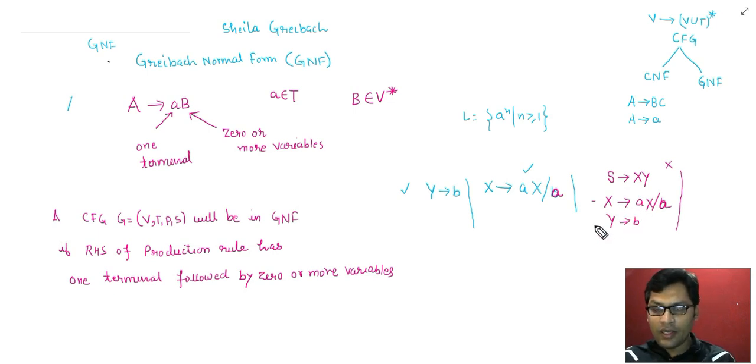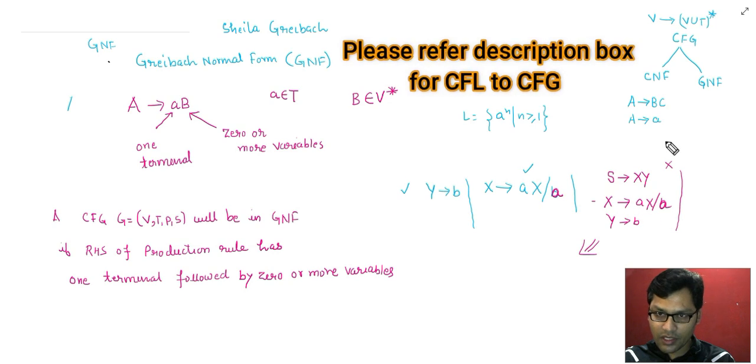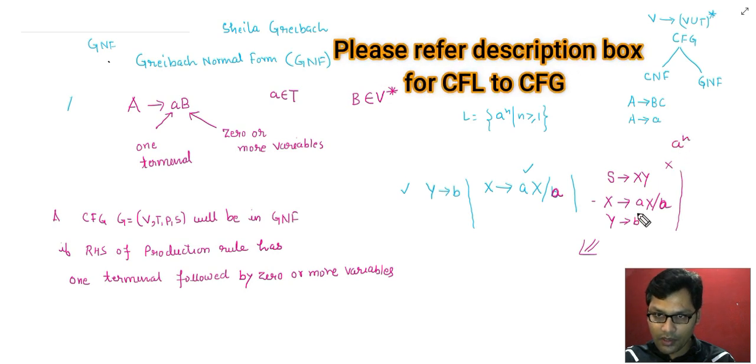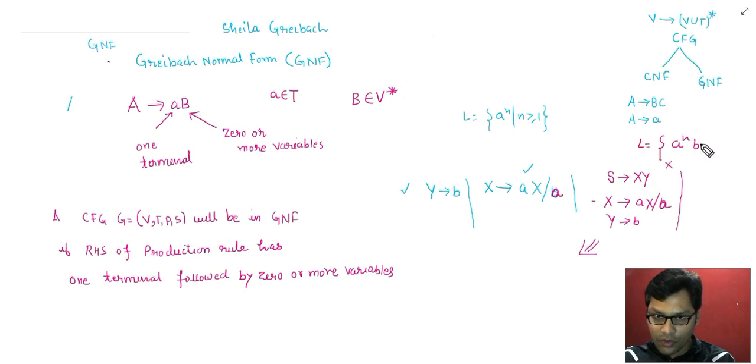Now question comes: this type of grammar is our context free grammar. In previous video, we already discussed how to generate context free grammar for context free language. This grammar represents the language a to the power n followed by b such that n is greater or equal to 1. So if this type of question is a context free language or a grammar will be asked to convert this grammar to GNF.